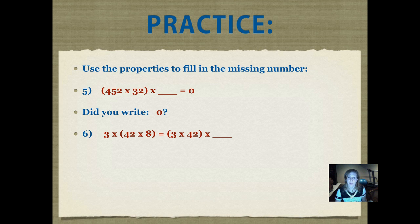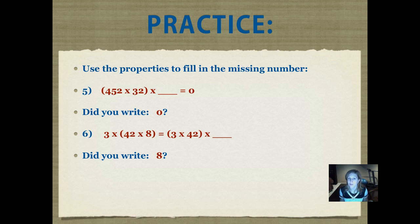Here's another one. Number six: write that entire number sentence in your journal and fill in the blank space with the number that would go there. Did you write 8? Look at both of those sets of numbers on either side of the equal sign — we didn't change the order. This is the associative property. 3 times 42 times 8 is going to equal 3 times 42 times 8, so 8 is the only number that can go in that blank space to make it equal to the set on the left.